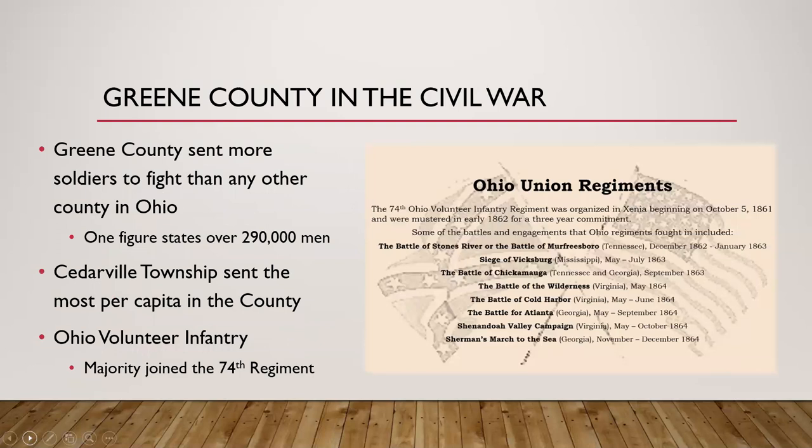So what was Greene County's role in the Civil War? During the war, Ohio sent more than 290,000 men to fight. Greene County sent more men to fight than any other county in Ohio — which is remarkable given its size. Cedarville Township sent the most per capita in the county. A majority of men from Greene County joined the 74th Ohio Volunteer Infantry, organized in Xenia in October of 1861. Other regiments included the 94th, the 110th, the 154th, and the 184th, among others that appear in the records.